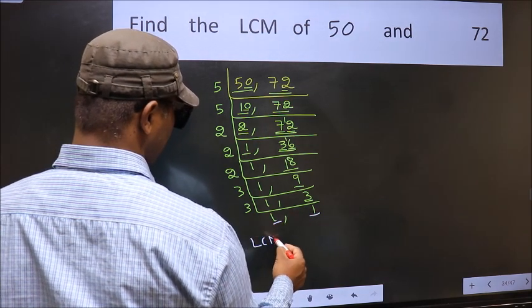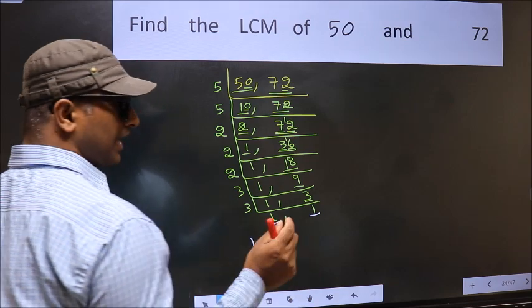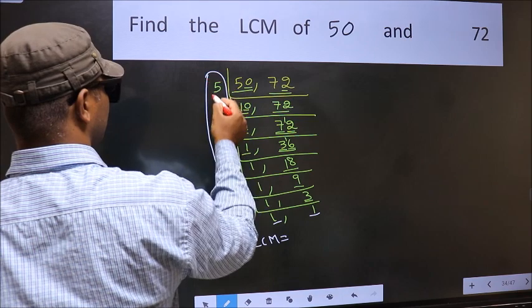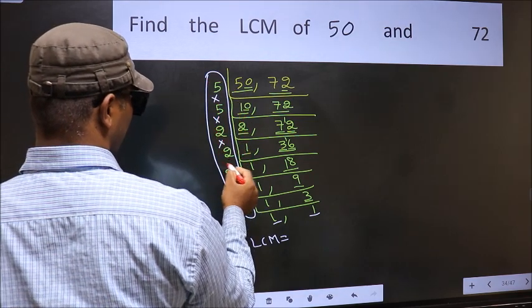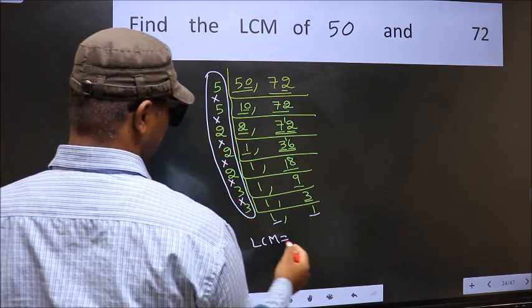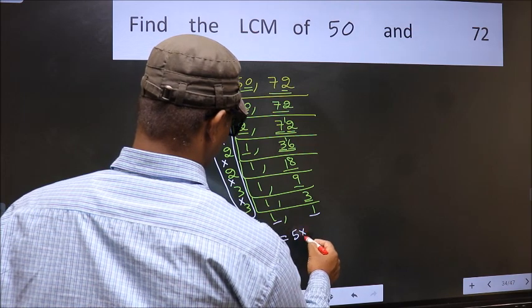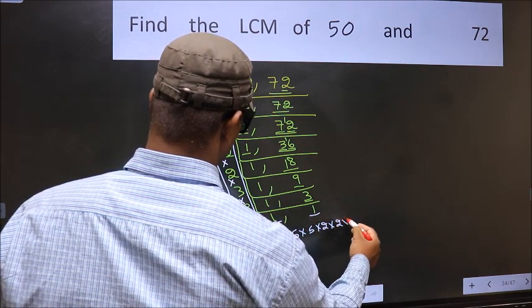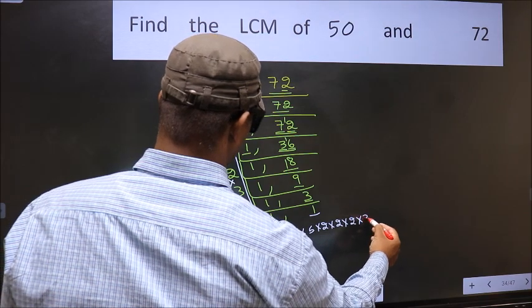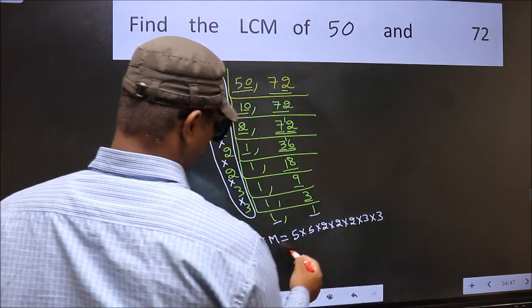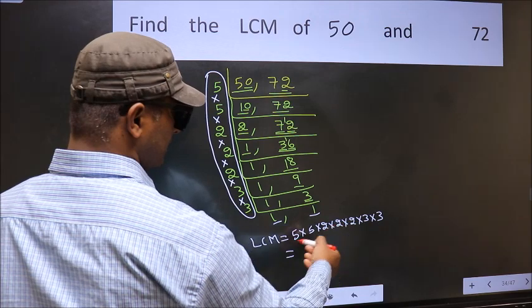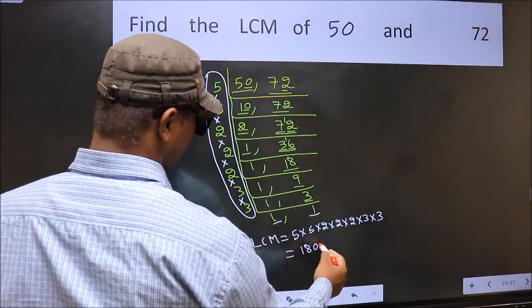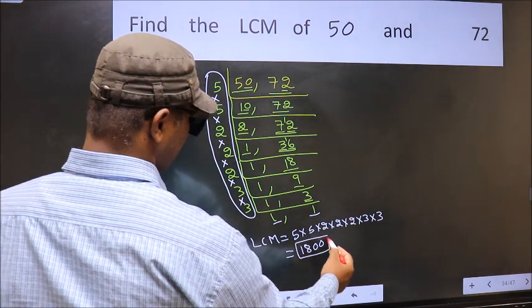So our LCM is the product of these numbers: 5 x 5 x 2 x 2 x 2 x 2 x 2 x 3 x 3. When we multiply these numbers, we get 1800. So 1800 is our LCM.